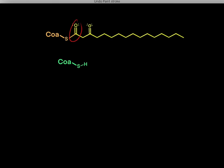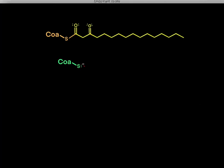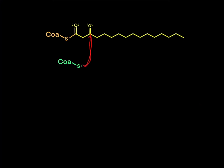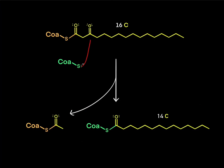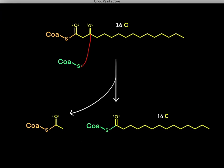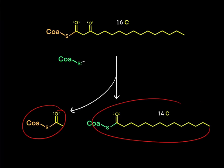Now we have a compound with two carbonyl groups. The last step is to take another coenzyme A, deprotonate its thiol hydrogen to form a nucleophilic sulfur anion, and nucleophilically attack the beta-carbonyl carbon. We form a bond and break a bond — the electrons fall on the adjacent oxygen, separating the two groups. This gives us two products: an acetyl-CoA molecule and a new acyl-CoA that is two carbons shorter.